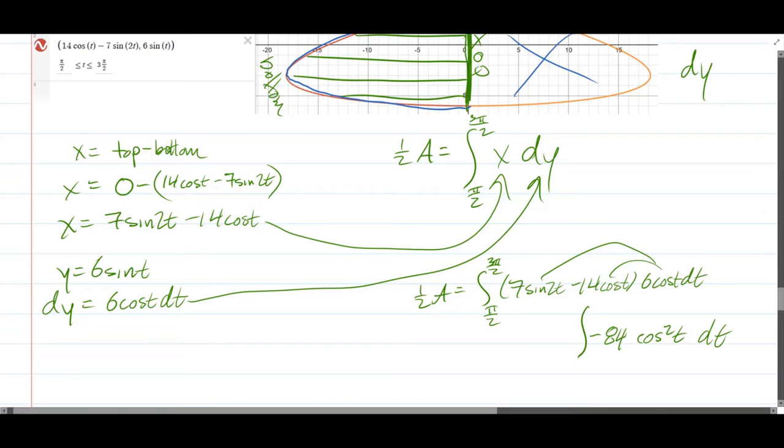Now, the other one, 7 times 6, that's 42. Okay, so the first integral, you're going to have to use an identity here for sine 2t.